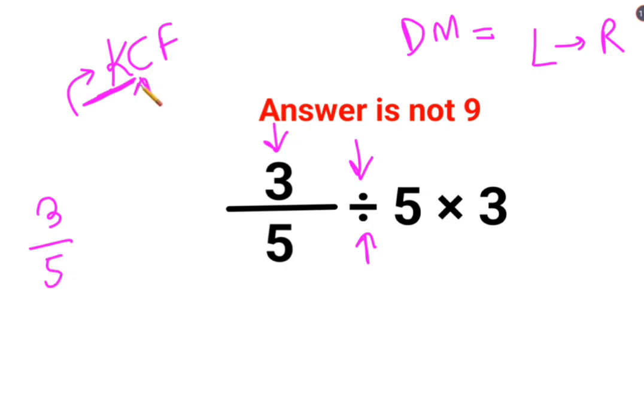C stands for changing the division sign to multiplication. F stands for flipping or taking the reciprocal of 5, which is 1 upon 5, multiplied by 3.